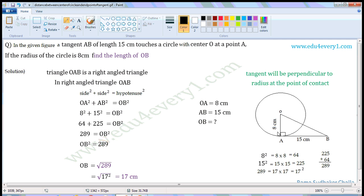Given OA is equal to 8 cm and AB is equal to 15 cm, we have to find the length of OB. Substituting the values, we can write this as 8² + 15² = OB².